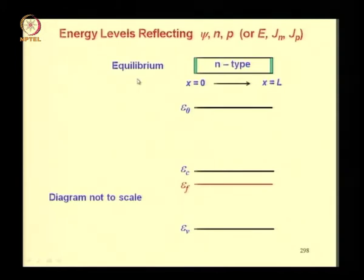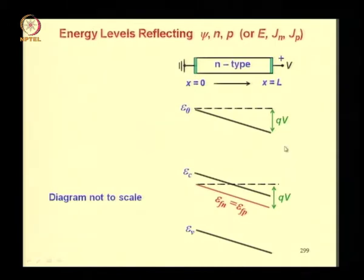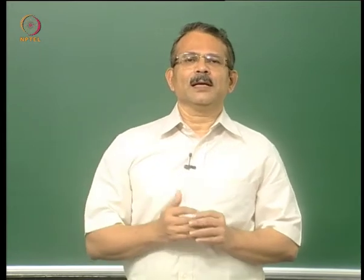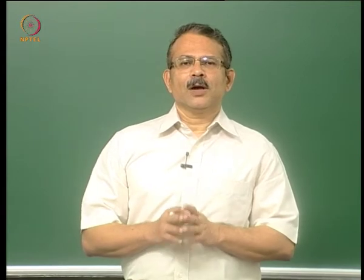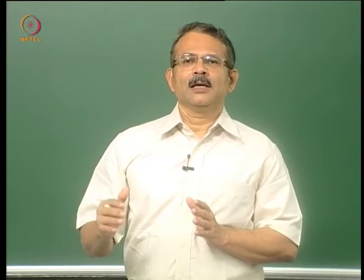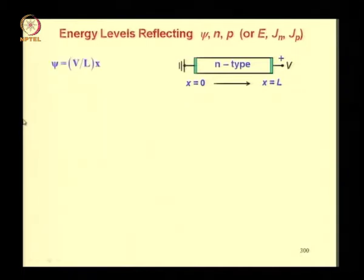The diagram under equilibrium conditions, already drawn in the previous class, shows E0, Ec, Ef, and Ev. The moment you apply a positive voltage to the right-hand contact, all your levels tilt downwards to the right. In principle you can start from any of the levels to develop this energy band picture. We will start from E0 in this case. Later we will show that although in principle we can start from many levels, in most devices—particularly when conditions are non-uniform—it is most efficient to start with the Fermi level.